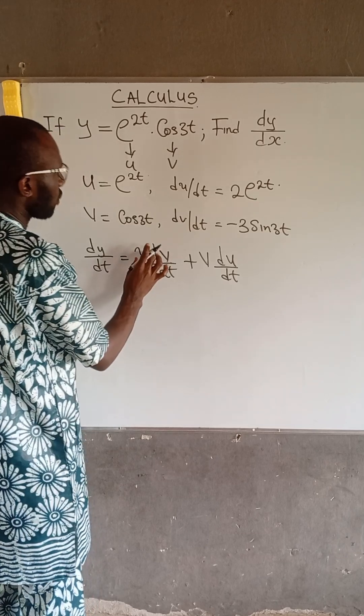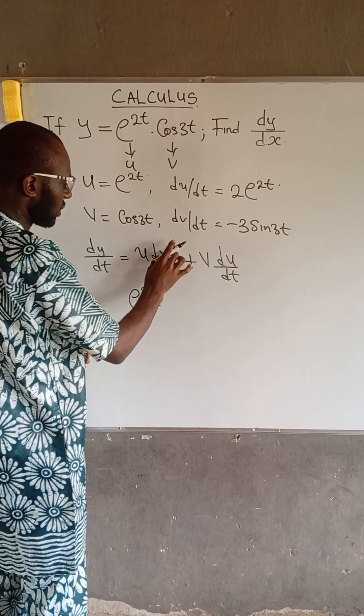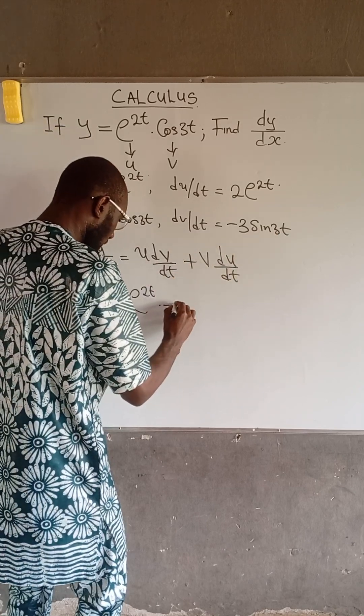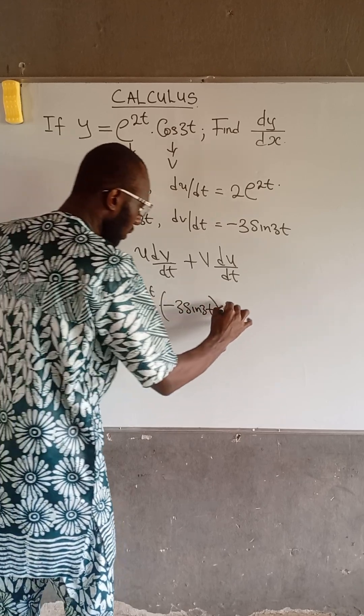At this point, the value of u is e to the power of 2t multiplied by dv over dt which is minus 3 sin 3t. So we have minus 3 sin 3t, all enclosed in the bracket, plus.